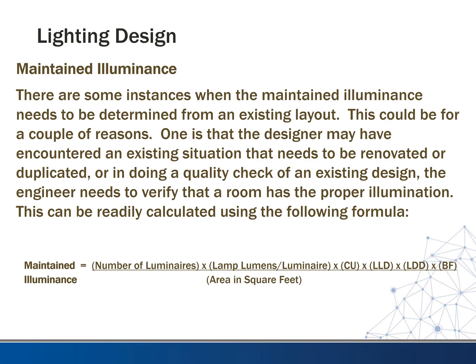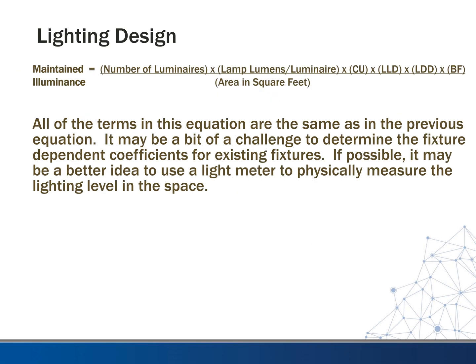We may have instances where we're going into an existing space where they're gutting the ceiling and want you to replace the lighting to get the same maintained lighting level or even improve upon it. In that case, you need to figure out what they already have. This is really the same equation rearranged — instead of solving for the number of luminaires, you already know that and can calculate what foot candle level the room was designed for. You may have to estimate some coefficients if you can't find the exact fixture catalog sheet, but you should be able to get pretty close.